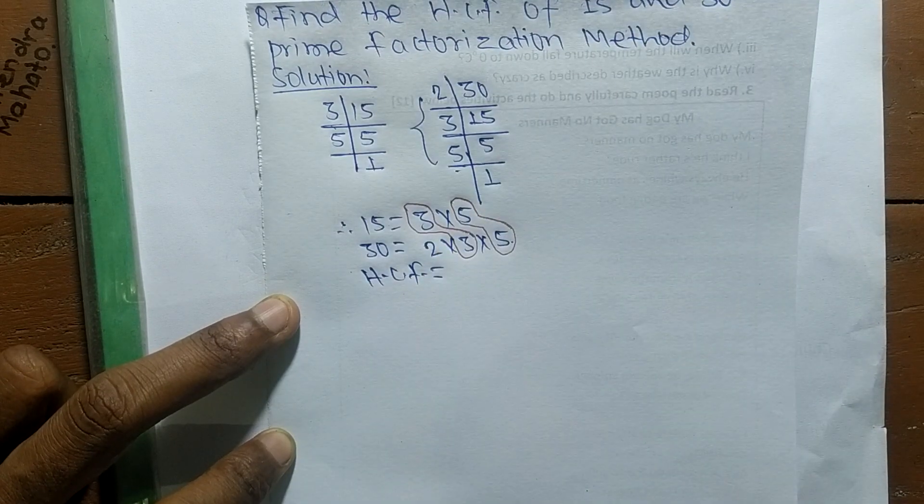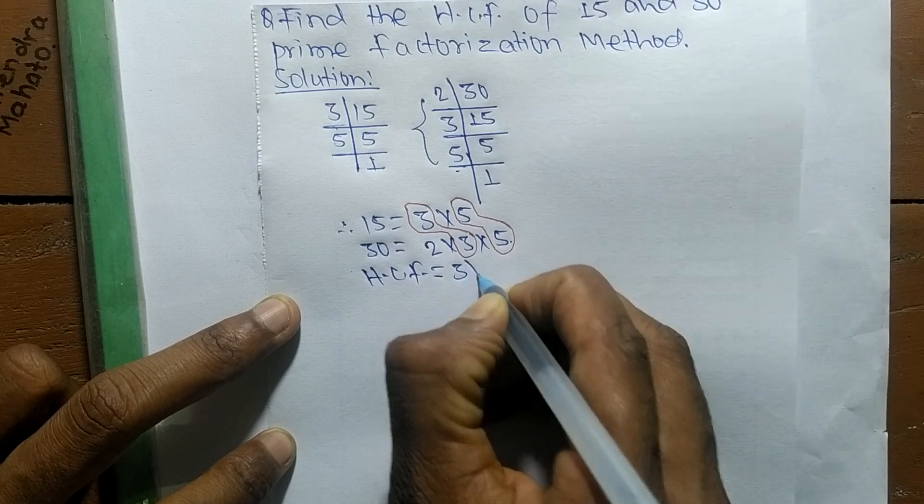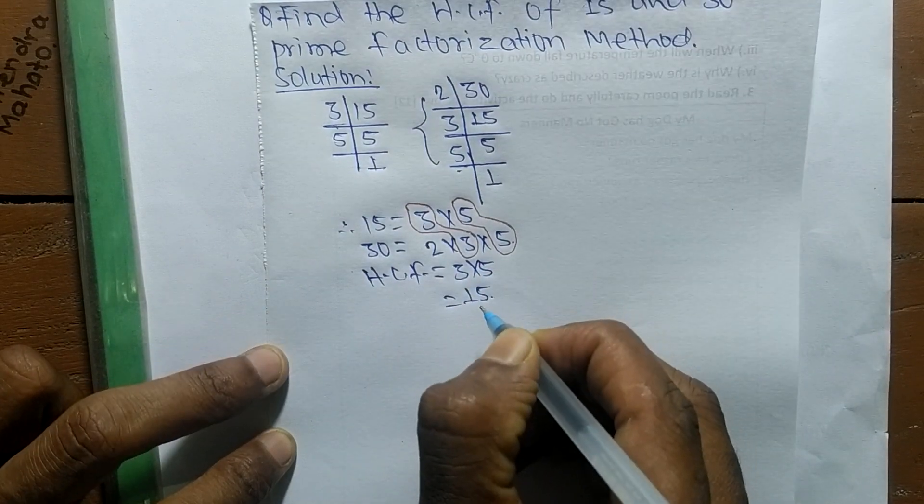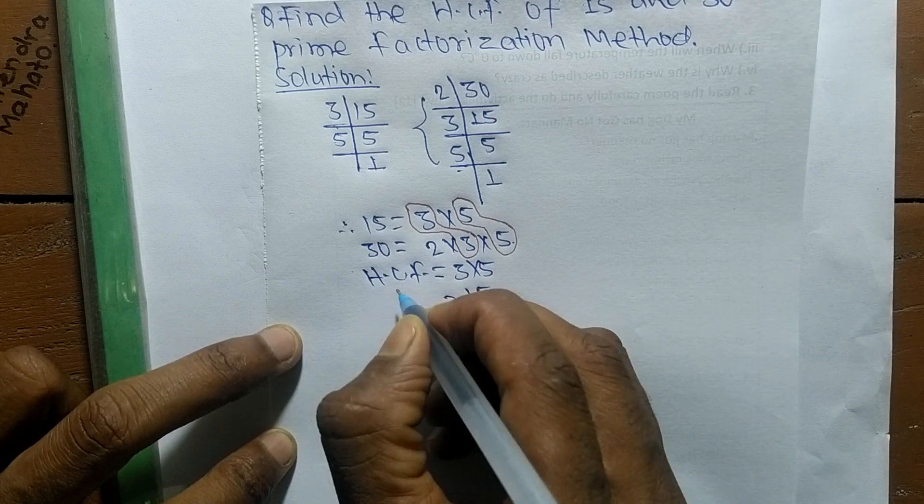So HCF equals 3 times 5, which equals 15. Therefore, 15 is the highest common factor of 15 and 30.